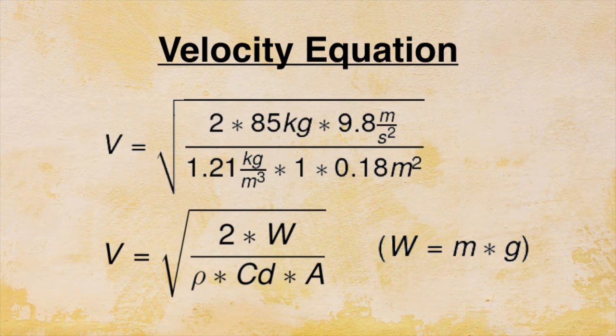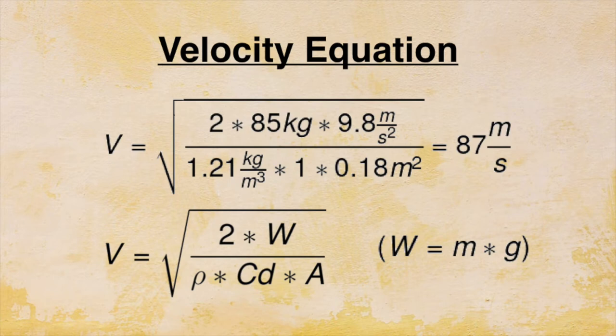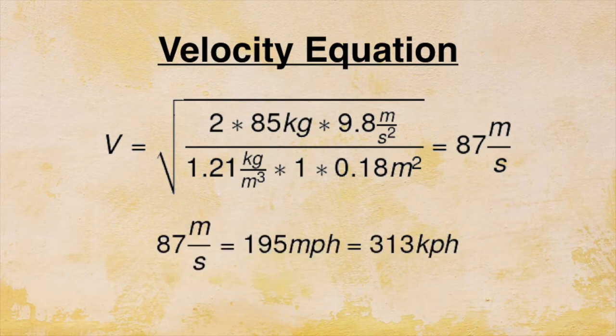We'll use mass equals 85 kilograms, which is around 185 pounds. Gravity equals 9.8 meters per second squared. Air density equals 1.21 kilograms per meter cubed. Drag coefficient equals 1. And surface area equals 0.18 meters squared. Solving the equation, we see that terminal velocity for this skydiver is 87 meters per second, which is 195 miles per hour, or 313 kilometers per hour. That's really fast and dangerous for the skydiver.